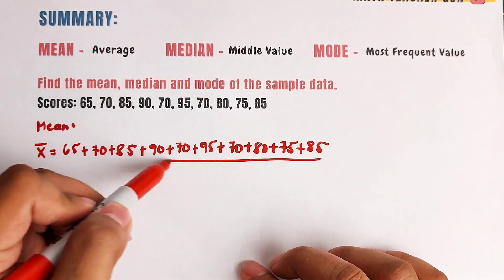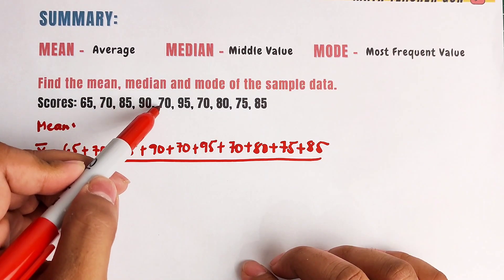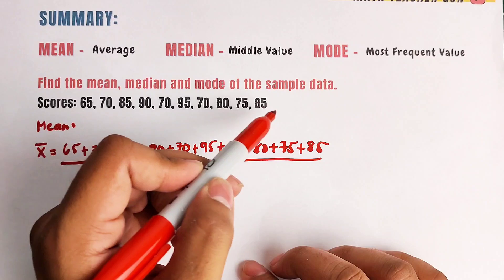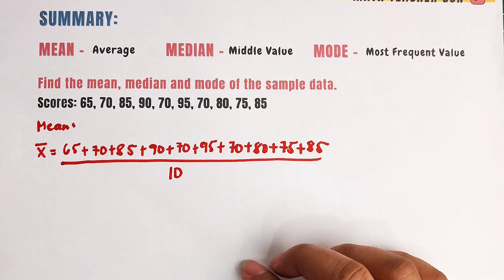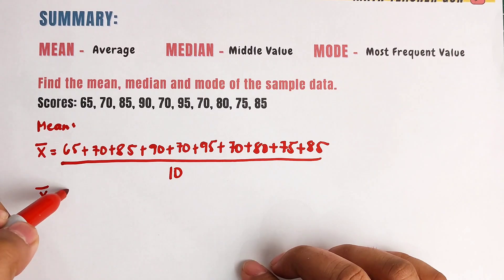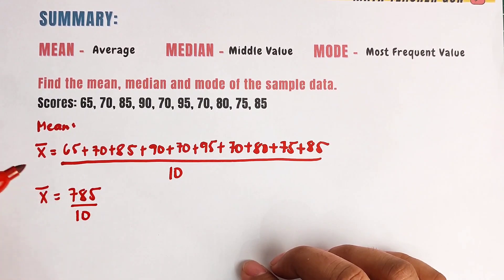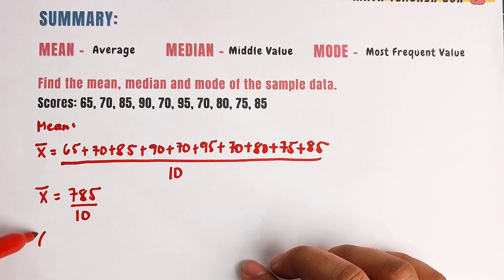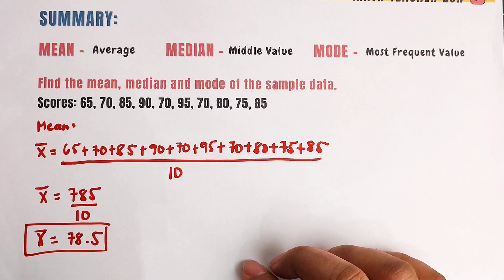Divide the sum by the number of data: 1, 2, 3, 4, 5, 6, 7, 8, 9, and 10 — so this is over 10. Adding up these numbers gives us a sum of 785 over 10. Dividing 785 by 10, the mean or average is simply 78.5.